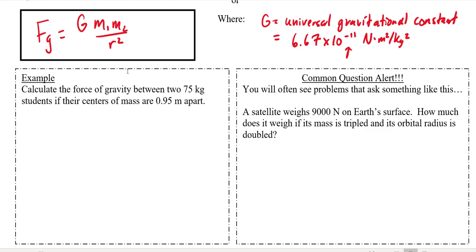So we're going to calculate the force of gravity between two 75 kilogram students as they stand 0.95 meters apart. Fg equals 6.67 times 10 to the negative 11, multiply that by 75 and then by 75 again, and divide that by 0.95 squared.